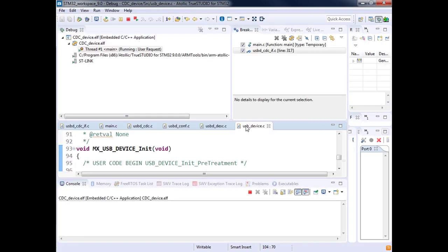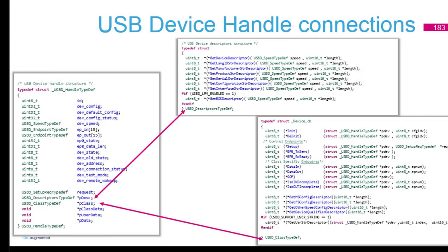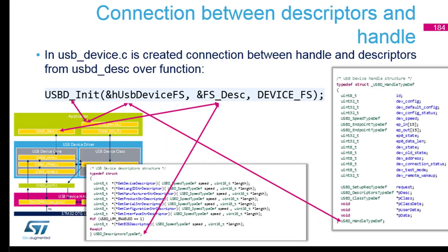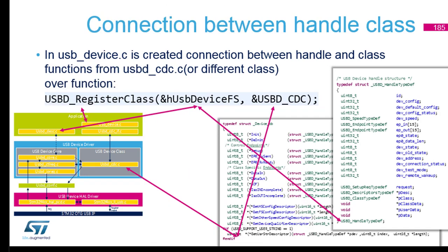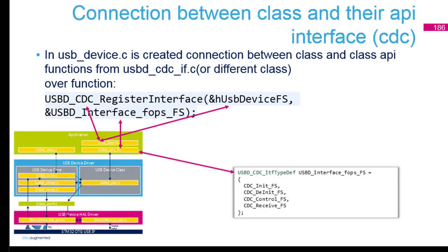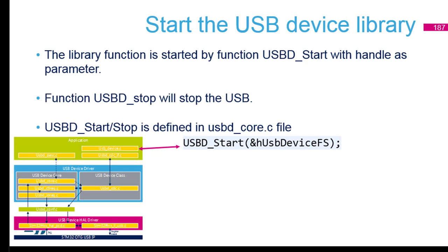The internal structures are pointer on pointer — let's not get lost in it. The init takes the descriptors and puts those pointers inside the huge structure. When you register the class, you register the functions available. When you register the interfaces, it allows the upper side to call the different functions we used this morning: Receive_FS, Control, Init, and DeInit.